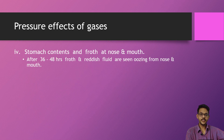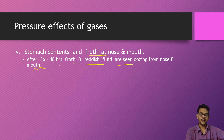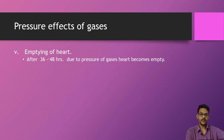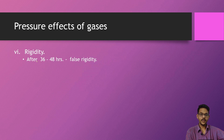Another effect of gases is that stomach contents may protrude out from the nose and mouth, leading to froth — a reddish fluid seen issuing from the nose and mouth. There is also emptying of the heart, which occurs at 36 to 48 hours due to pressure of gases, causing the heart to become totally empty. Additionally, there is false rigidity — a form of differential diagnosis of rigor mortis — where accumulation of gases causes the body to become rigid, occurring at 36 to 48 hours.